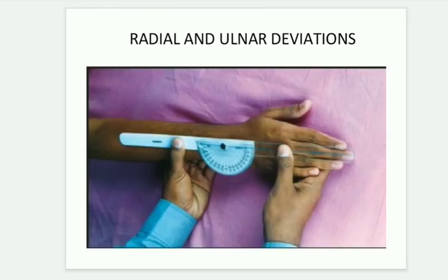For deviations — radial and ulnar — the range for radial deviation is 0 to 20 degrees. The position is arm abducted to 90 degrees, elbow flexed, forearm pronated, and hand rested on a table with the palm facing downwards. The fulcrum must be placed over the capitate, at the third metacarpal.